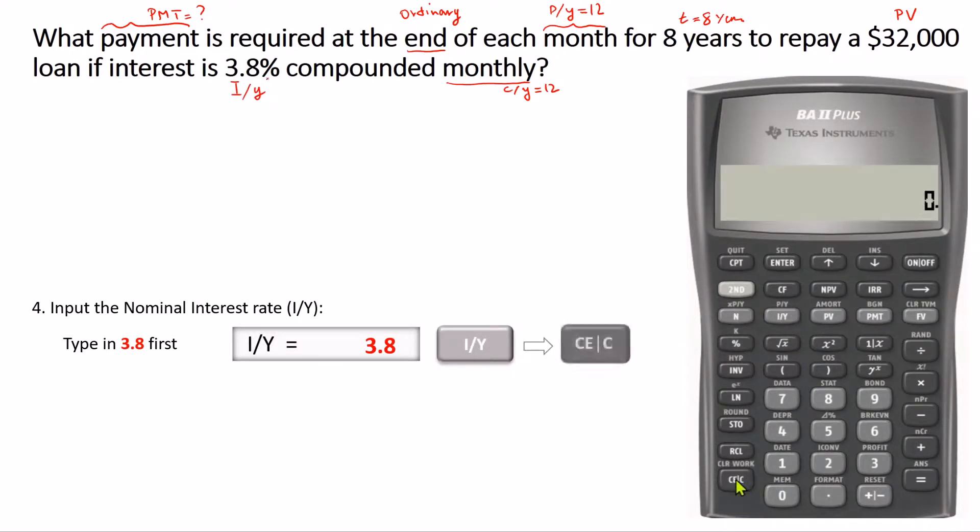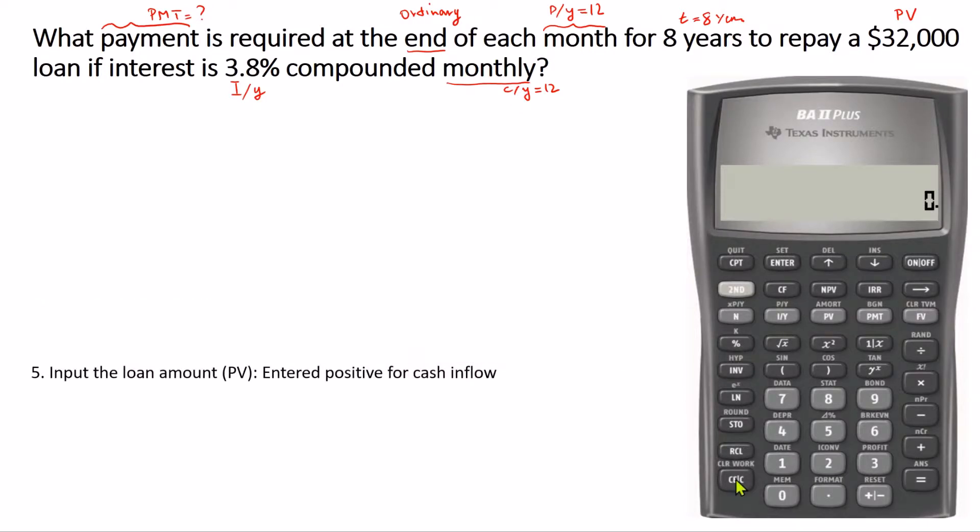Clear and move on to the next value, which is the loan amount. The loan amount is received first and repaid in the future through payments; therefore, loans are usually considered present value. We enter 32,000. As I said, $32,000 is cash inflow and therefore entered as a positive number. We press PV.